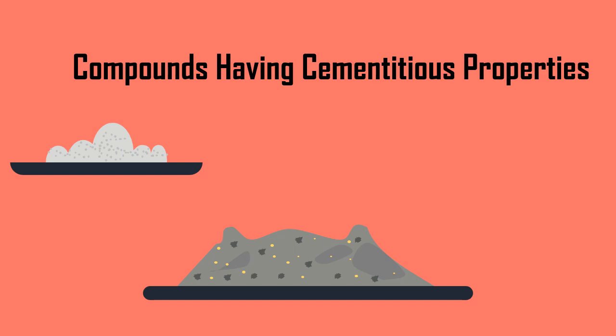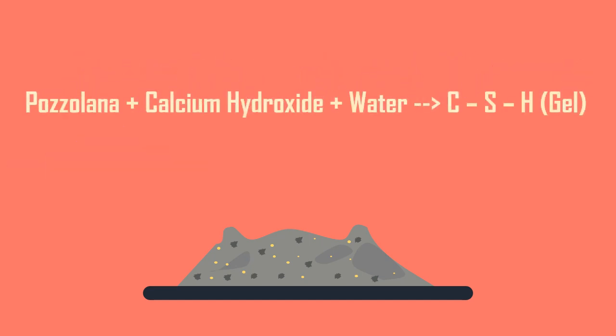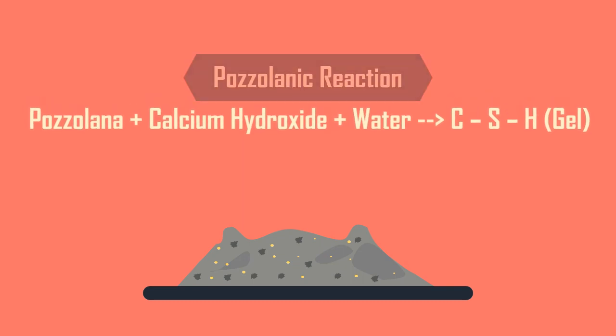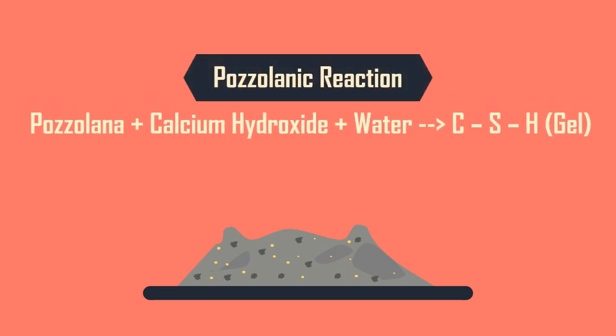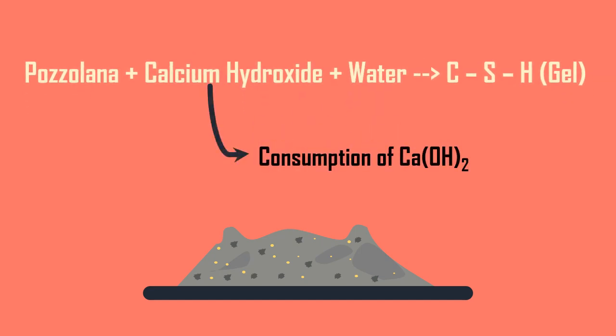This reaction is shown as: Pozzolana plus calcium hydroxide plus water gives CSH gel. This reaction is called the pozzolanic reaction. The reaction involves the consumption of Ca(OH)₂.